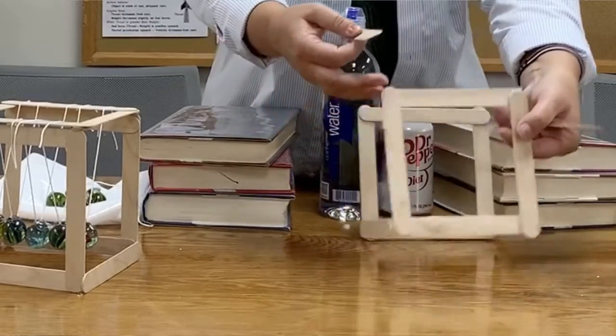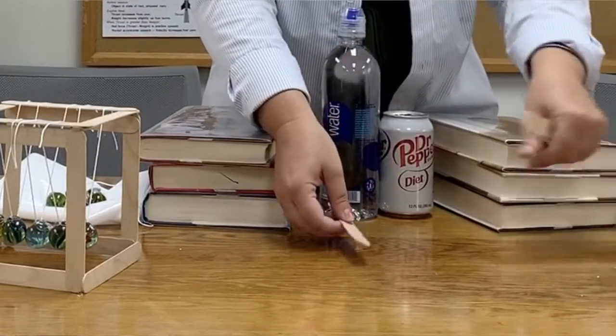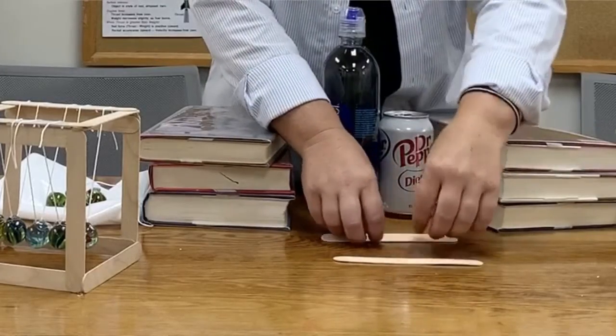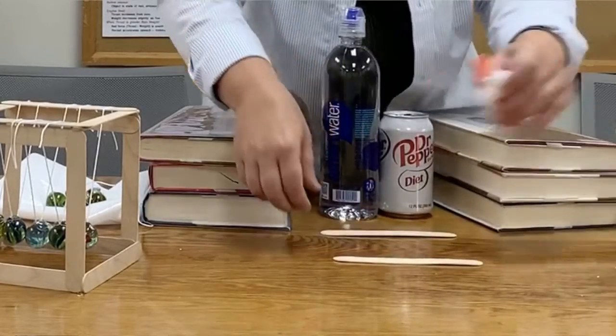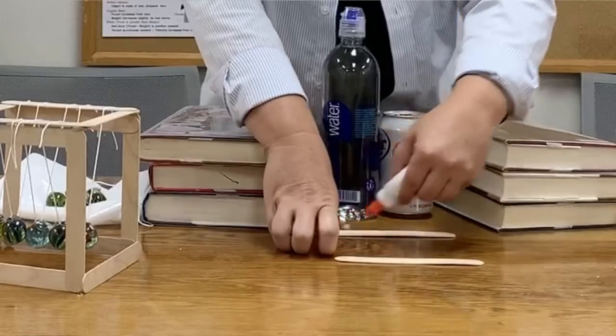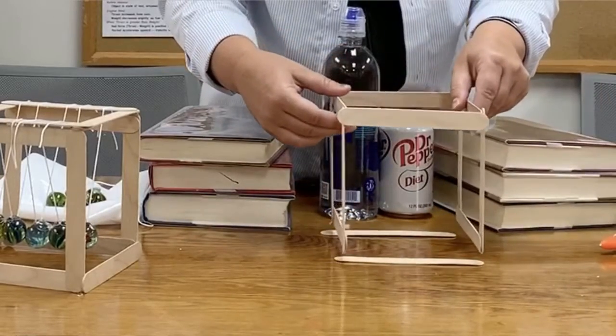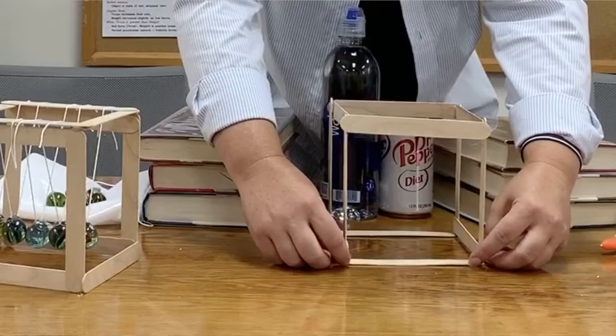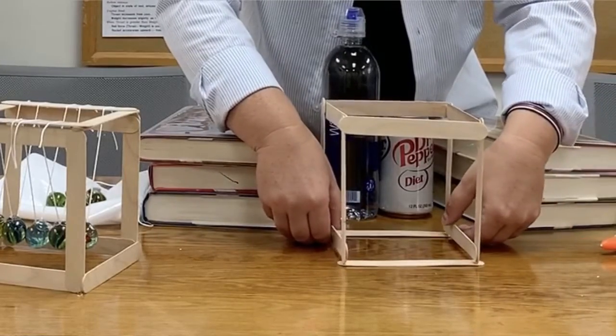The next step is to glue two at the top. You can do this by flipping it over and let gravity do its work and glue, glue, and place these. So have it glue like that.